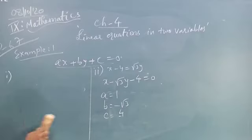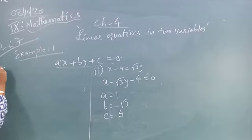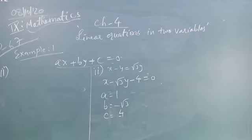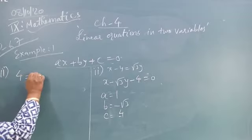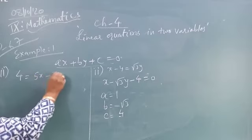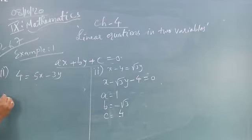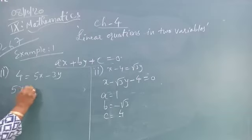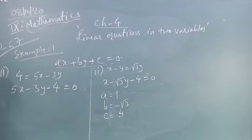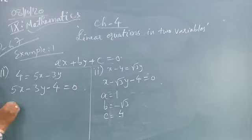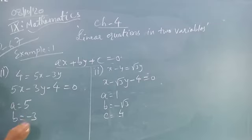Now equation number 3. That is given in the question as: 4 is equal to 5X minus 3Y. So this can be written as 5X minus 3Y minus 4 is equal to 0. We are taking 4 to the other side. Now what is A here? A is 5. B is minus 3.